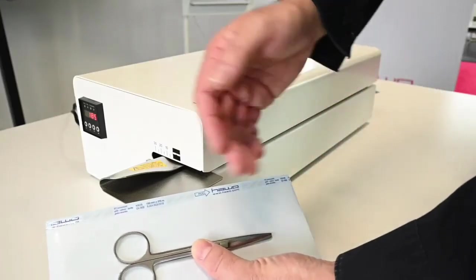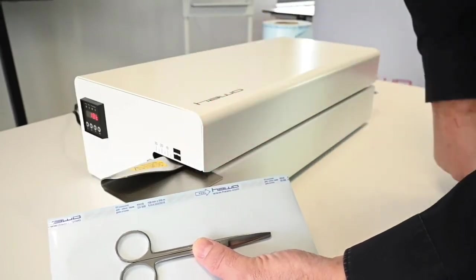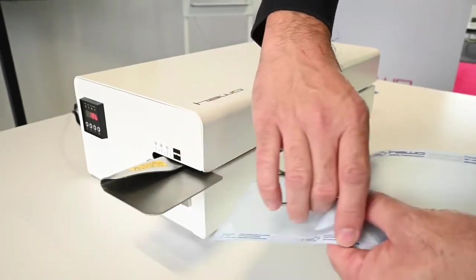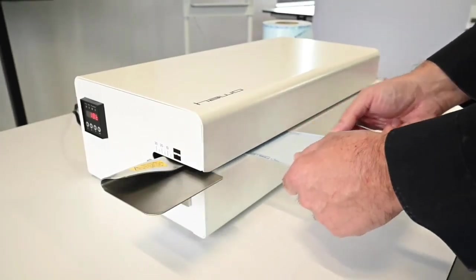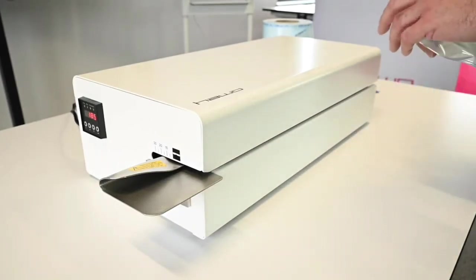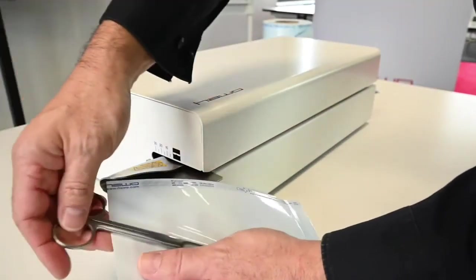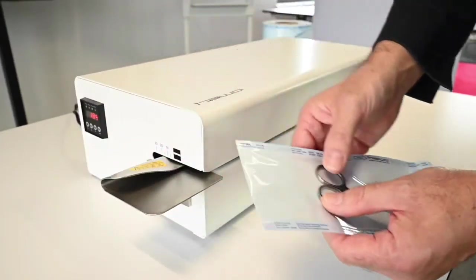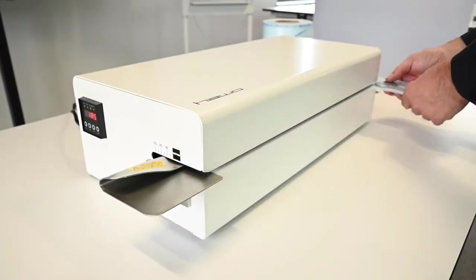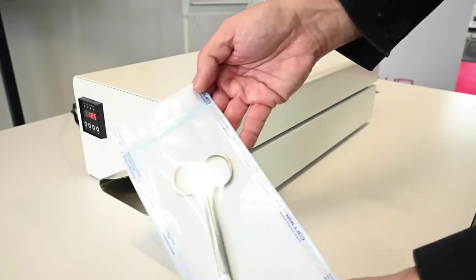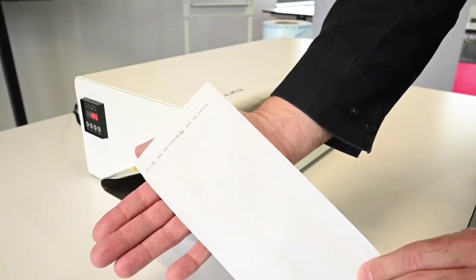In order to do packaging of our example instrument, sterile barrier system in suitable length is required. As a first step we'll be doing a closure seal. Afterwards the sterile barrier system is being filled and we do our second seal. As a result, our perfectly sealed instrument including printing information.